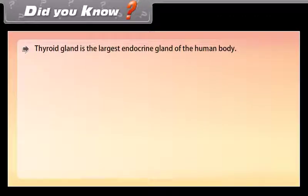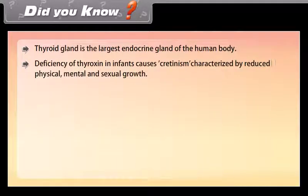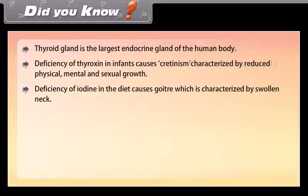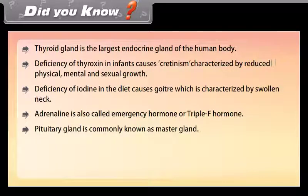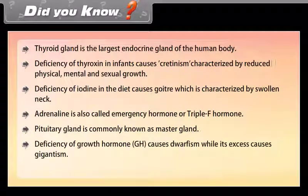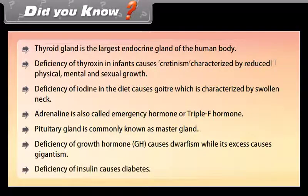The thyroid gland is the largest endocrine gland of the human body. Deficiency of thyroxine in infants causes cretinism, characterized by reduced physical, mental, and sexual growth. Deficiency of iodine in the diet causes goiter, characterized by swollen neck. Adrenaline is also called the emergency hormone or triple F hormone. The pituitary gland is commonly known as the master gland. Deficiency of growth hormone (GH) causes dwarfism while its excess causes gigantism. Deficiency of insulin causes diabetes.